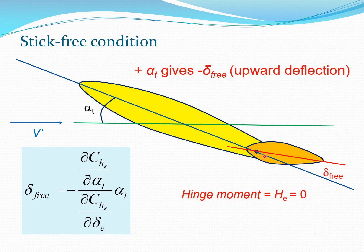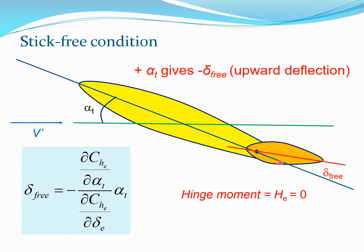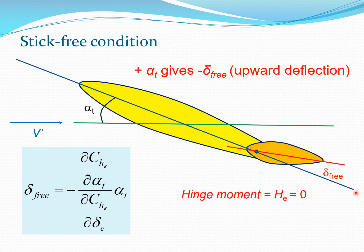This angle is delta_free, and this case corresponds to the hinge moment being equal to zero. You can intuitively understand that the elevator comes to an equilibrium location where the hinge moment is zero, and that a positive alpha_t gives a negative delta_free — an upward deflection with respect to the zero lift line of the tail.